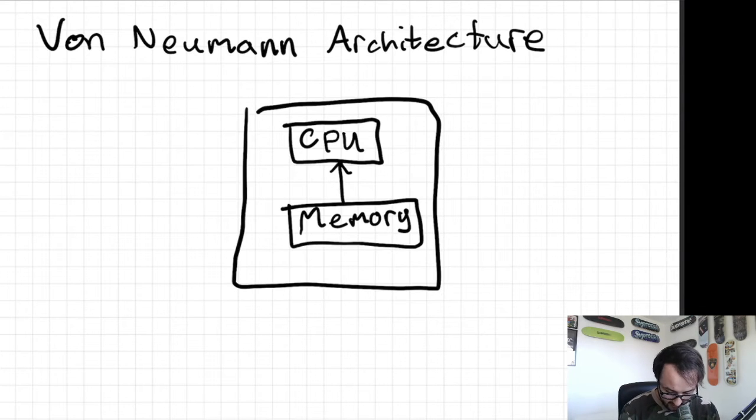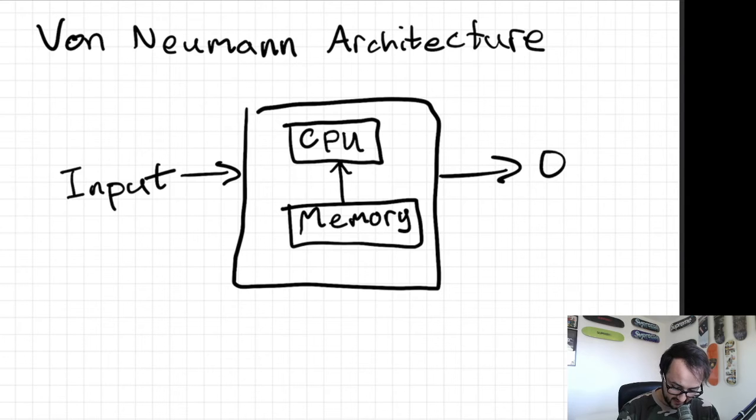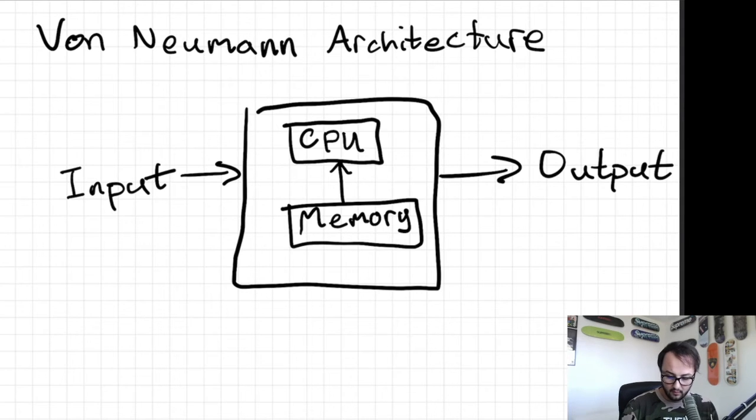You also have input devices that go into your computer, and you have output devices that output things from your computer. So you have your memory, which is tied directly to your CPU. Your memory is RAM.